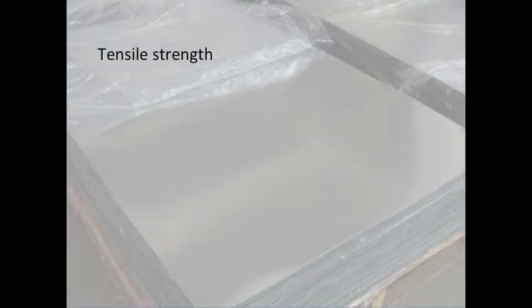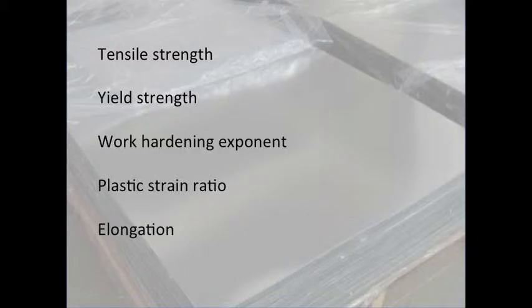One must assess the material's tensile strength, yield strength, work hardening exponent, the plastic strain ratio, and elongation. As a rule of thumb, metals should have a minimum elongation of 40%, a minimum plastic strain ratio of 1.6, and a minimum work hardening ratio of 0.2.